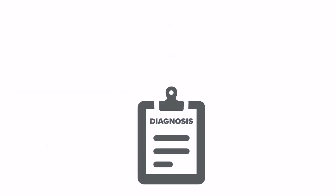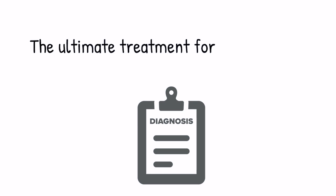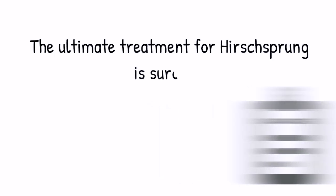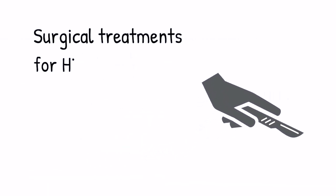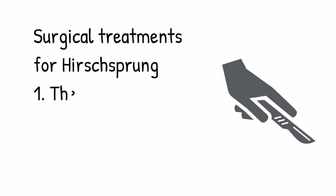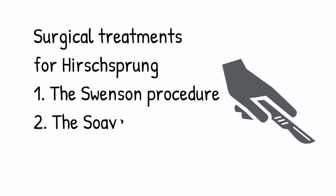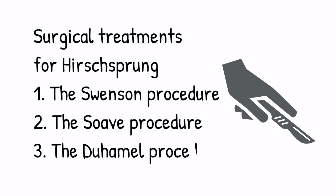Let's talk about the treatment for Hirschsprung's disease. The ultimate treatment is surgical. There are three surgical treatments for Hirschsprung's disease: the Swenson Procedure, the Suave Procedure, and the Duhamel Procedure.